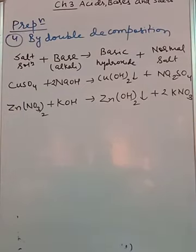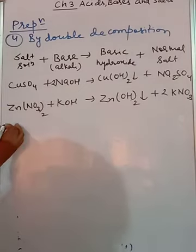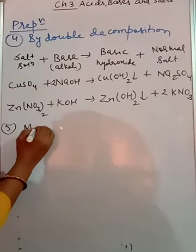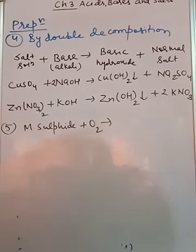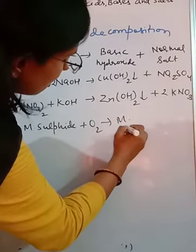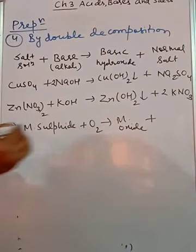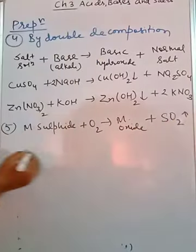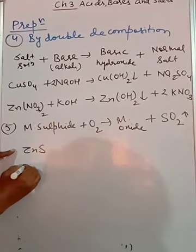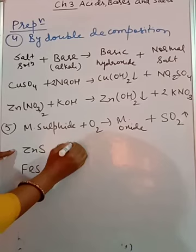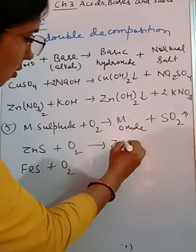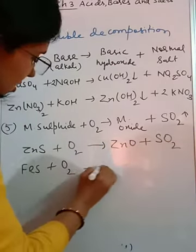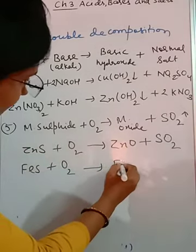Now the next method is by the action of oxygen on metal sulfides. So take here metal sulfide plus oxygen. What we will get in return? Metallic oxide plus SO2 gas. So ZnS, FeS, you can take any one, plus oxygen. What we will get there? ZnO plus SO2. What we will get here? FeO plus SO2.